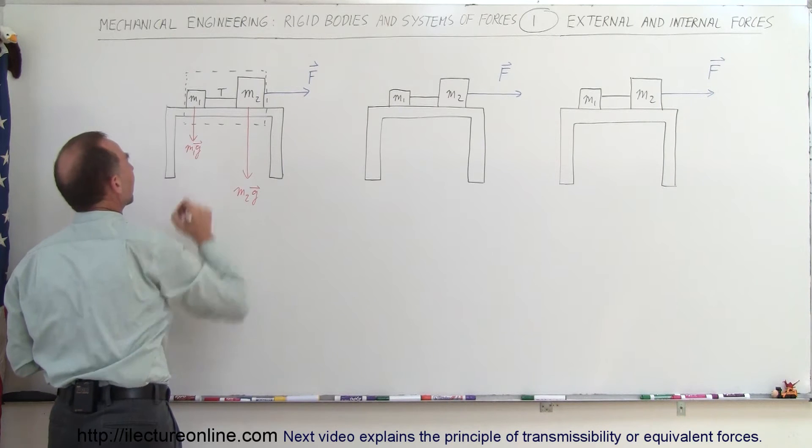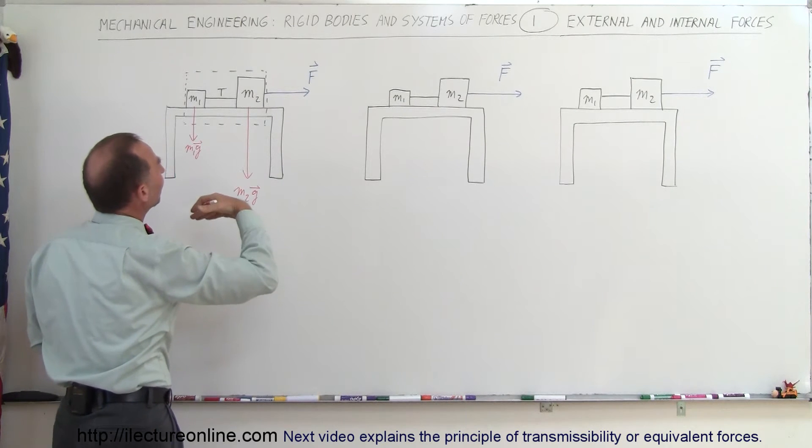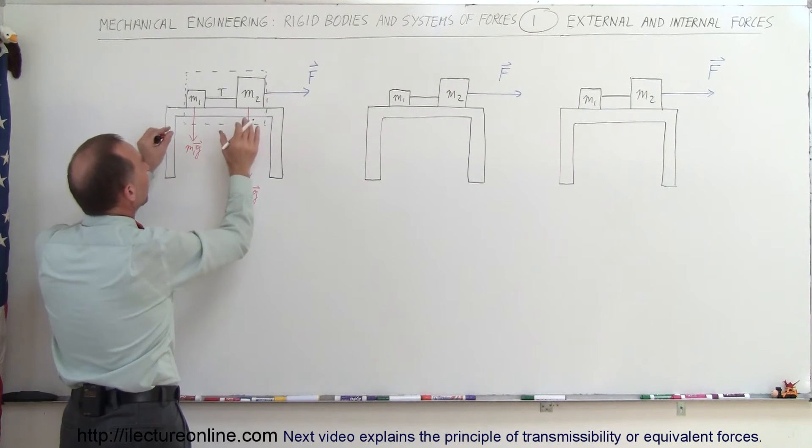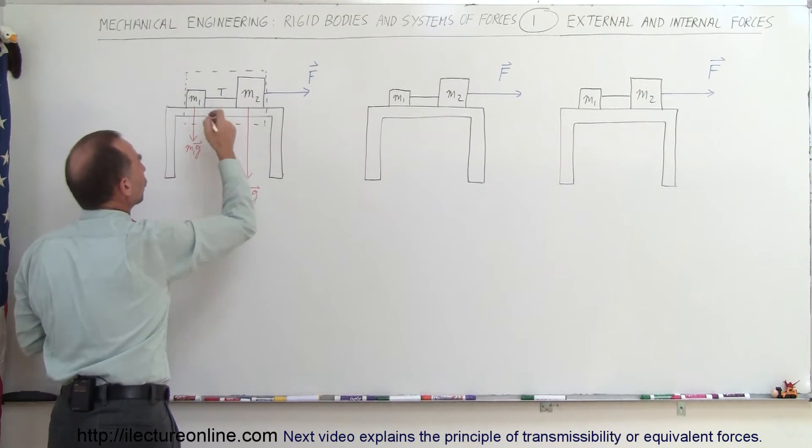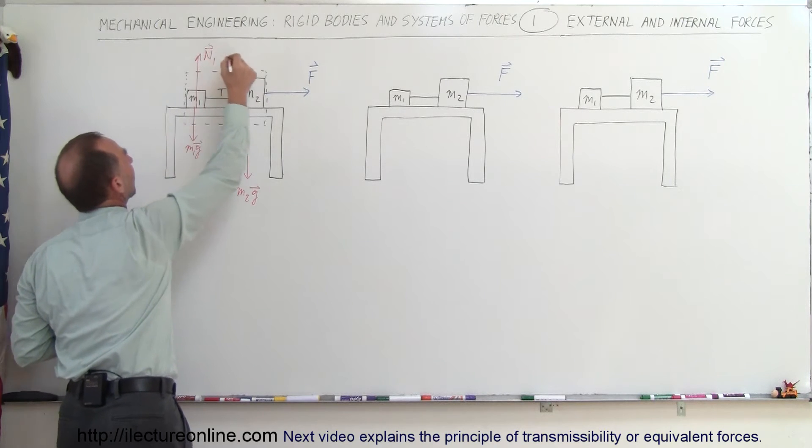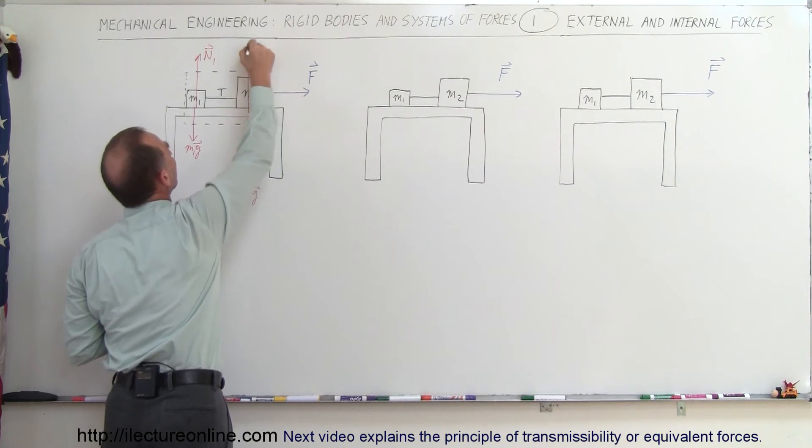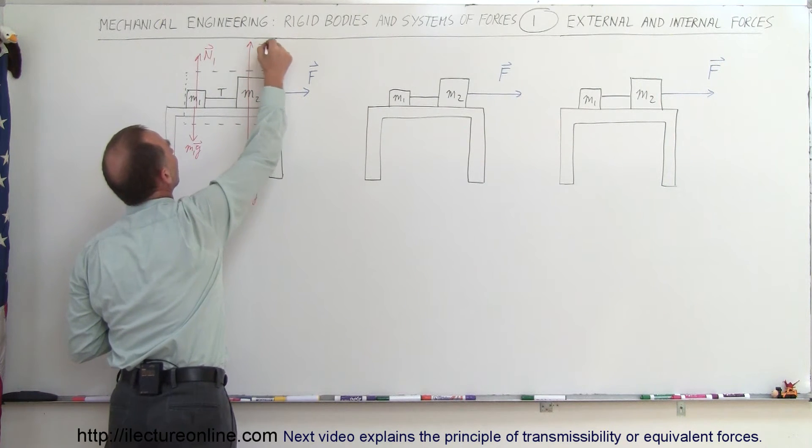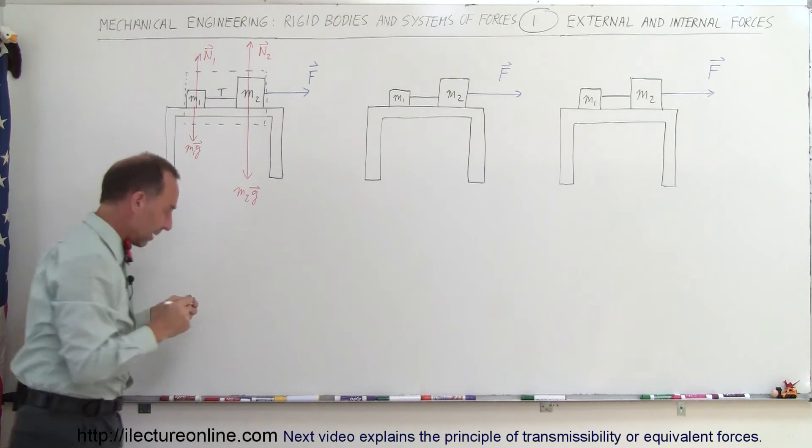And then we have the forces that are the table pushing back against M1 and M2. Those are the normal forces. So here we can write N1 which is a force and here we can write N2 which is the normal force acting on the second block.